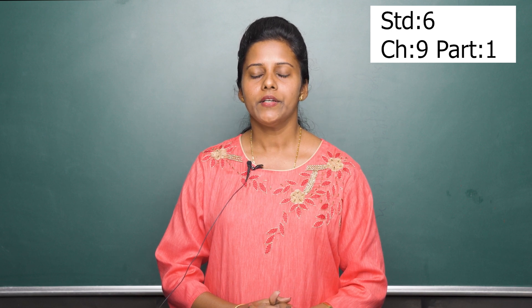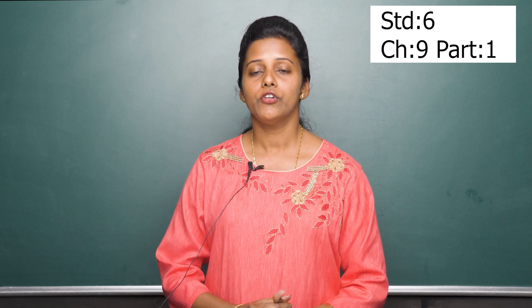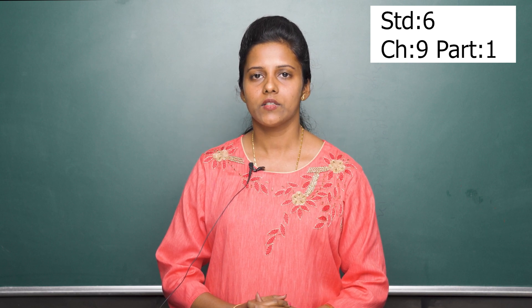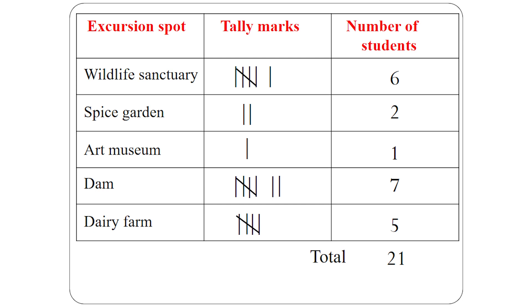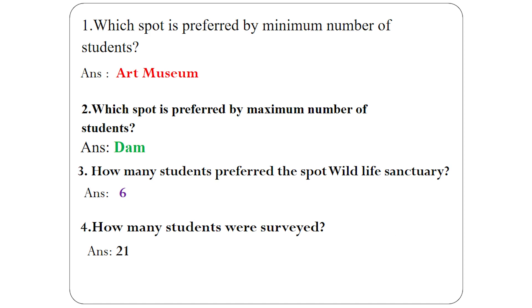Now let us interpret the given data by answering a few questions based on the tally marks table. Which spot is preferred by the minimum number of students? Observe the table — it is Art Museum. Which spot is preferred by the maximum number of students? That is Dam. How many students preferred Wildlife Sanctuary? The answer is six. Lastly, how many students were surveyed? We add up column three — the total number of students surveyed is 21.